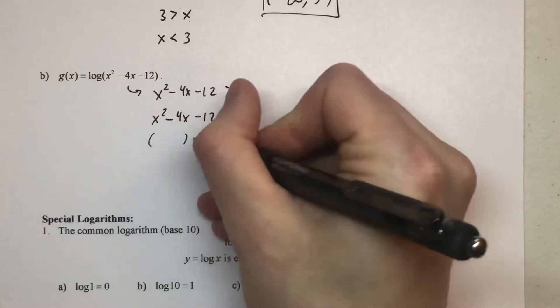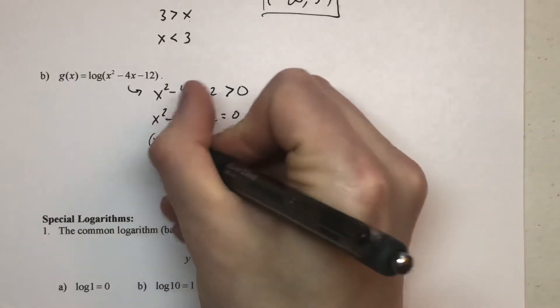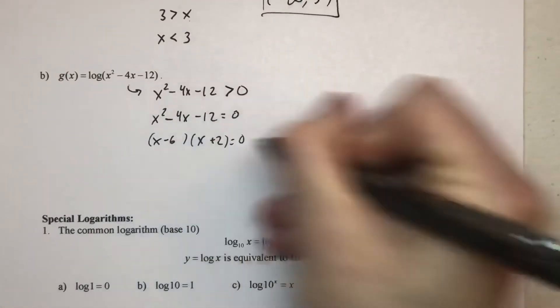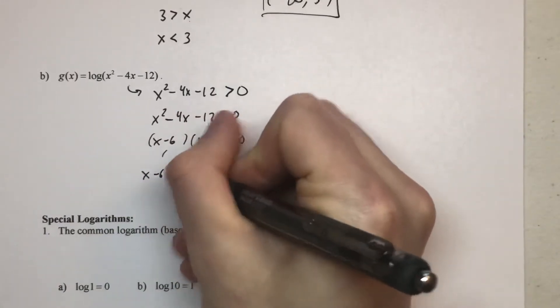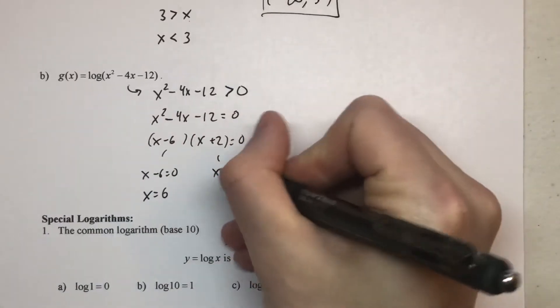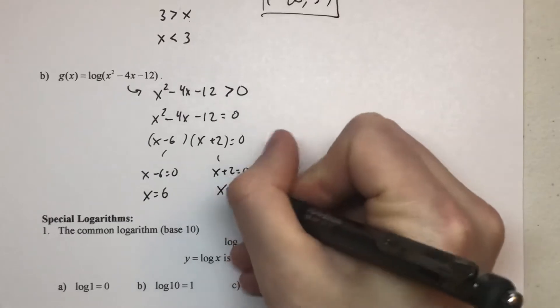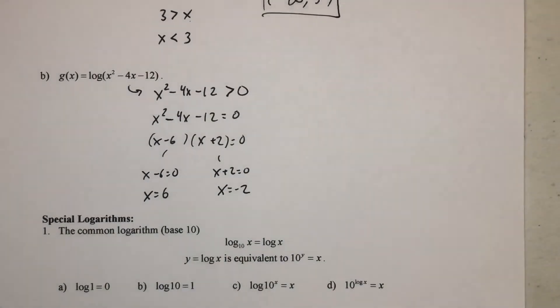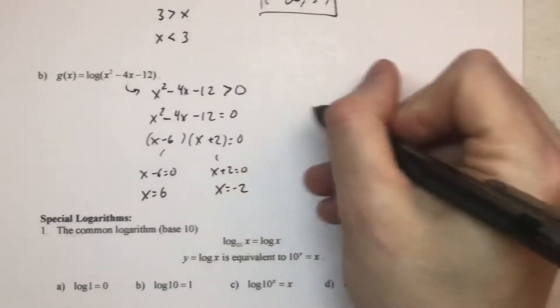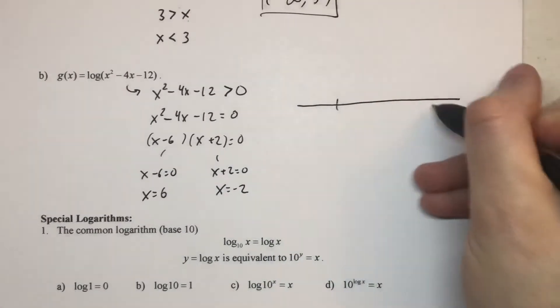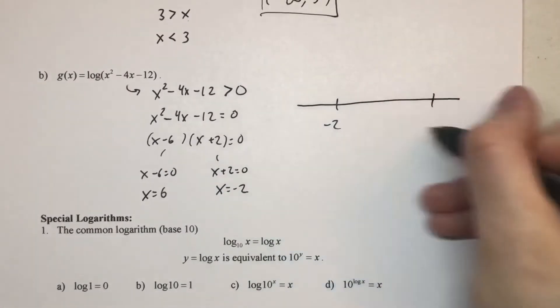Now in this case, this factors very conveniently to x minus 6 and x plus 2. So you get a 6 from that factor and a negative 2 from that factor. But then remember, those two factors, when we do those two values, those two zeros, we put them on a number line.